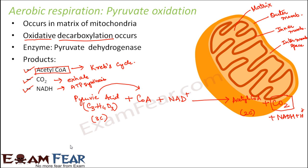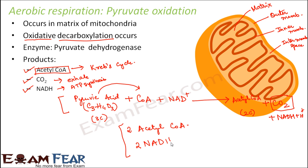Looking at the final conclusion of pyruvate oxidation: acetyl coenzyme A and NADH are formed. Since we had 2 molecules of pyruvic acid, this step is for 1 molecule, so it will be repeated 2 times. Therefore, the result will be 2 molecules of acetyl coenzyme A and 2 molecules of NADH. CO2 is not counted here as it will be exhaled, but these products will be utilized in the later steps of respiration.